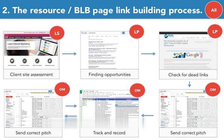The first thing that we want to do — and this is up to the lead SEO — is do a client site assessment. This is very quick. It's just to understand what type of content or resources we have on our website. It's a 99% chance that resource page link building is only going to a piece of content or a guide. So we have to understand what we have in our arsenal to pitch before we can do anything else.